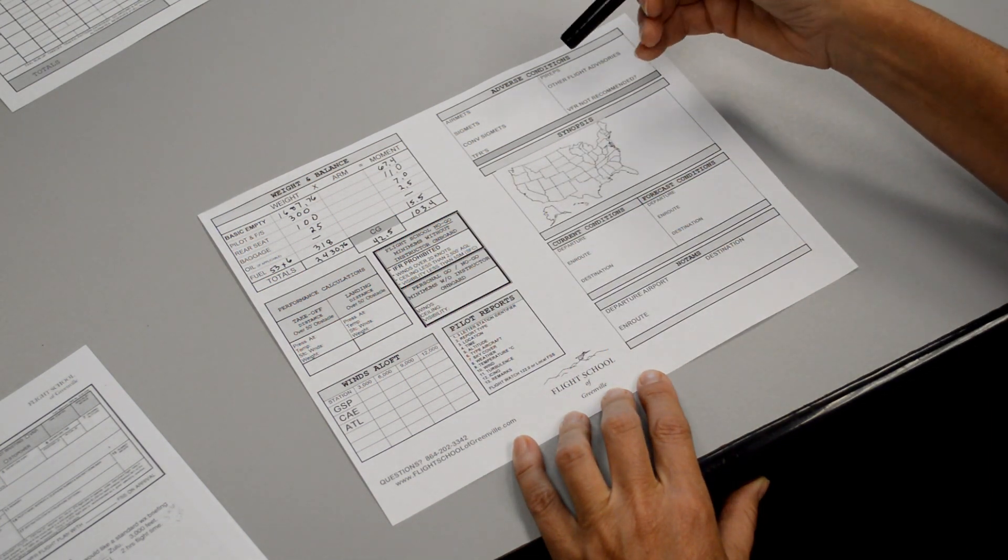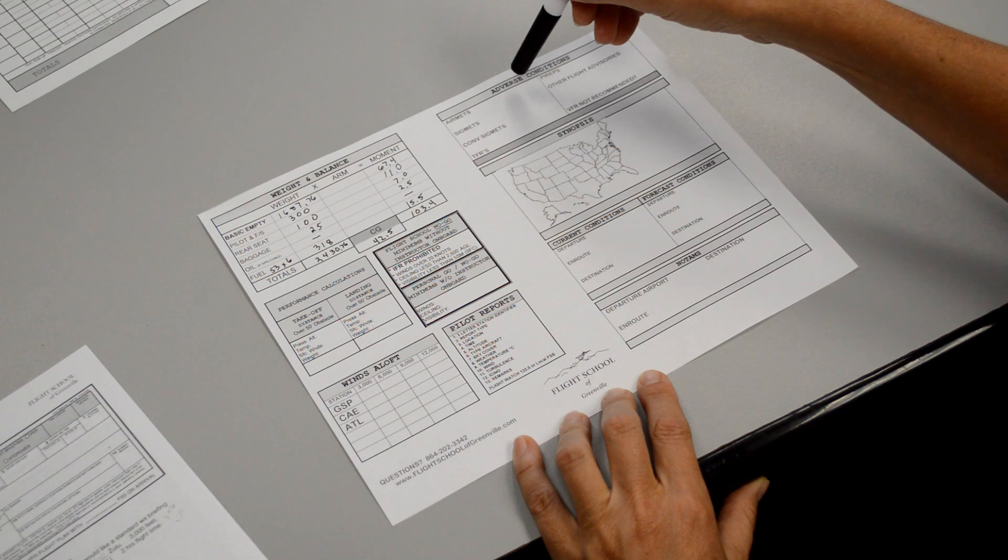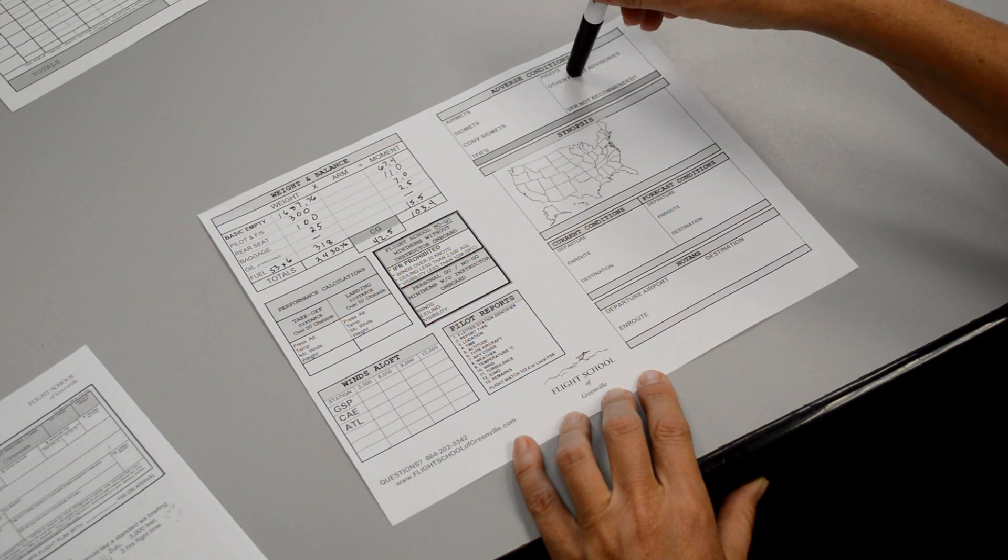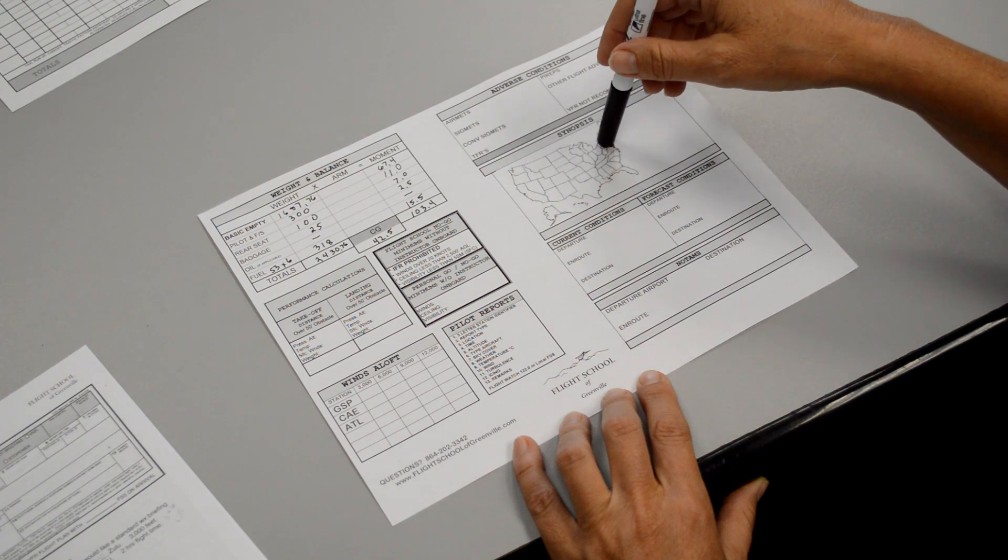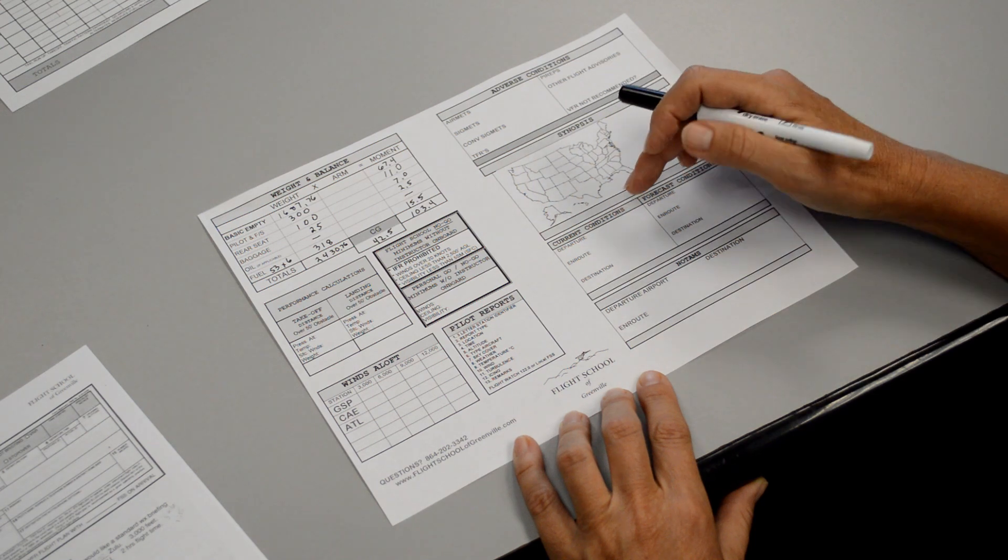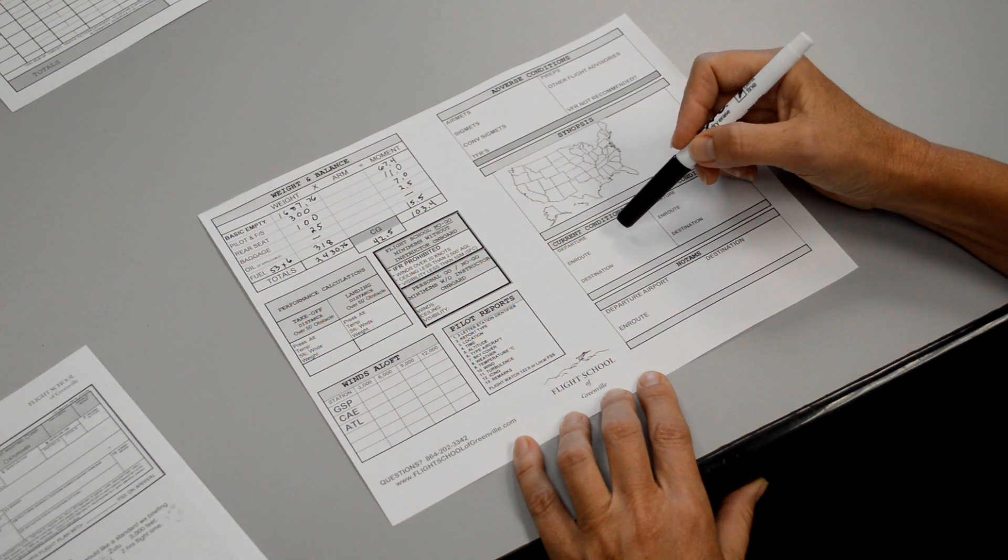We expect it to come out in a particular sequence. Usually they're going to give us the adverse conditions and TFRs, pilot reports. They give us the synopsis, which is where the pressure systems and fronts are. They usually give us the current conditions at our departure, en route, and destination.